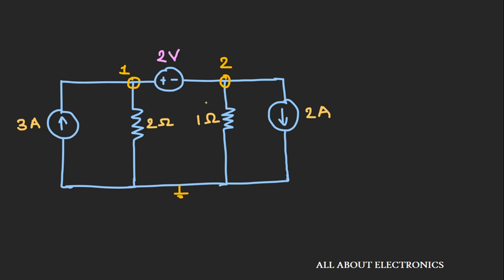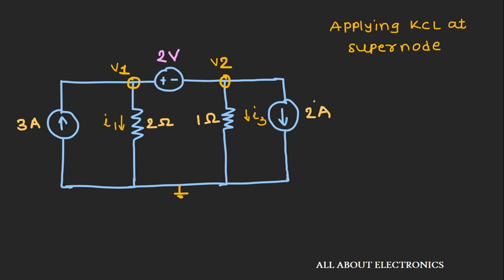In cases where you find a voltage source between two nodes, the concept of supernode is quite handy. When solving a circuit using nodal analysis and you find a voltage source between two nodes, you can consider those two nodes as a single entity — and that is what is known as a supernode. In case of a supernode, we consider node 1 and node 2 as a single entity, and instead of writing two separate KCL equations, we combine them into a single equation.